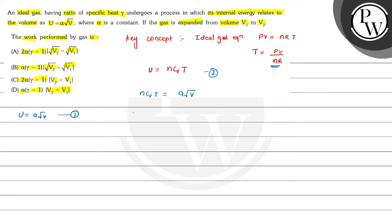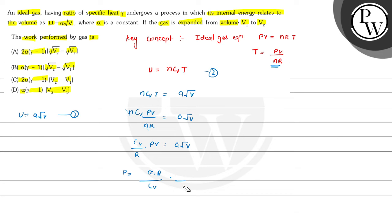Now we substitute the value of temperature T equals PV divided by nR into this. So nCv times PV divided by nR equals alpha root V. The n cancels out, giving Cv divided by R times PV equals alpha root V. Solving for pressure: P equals alpha times R divided by Cv times 1 over root V.